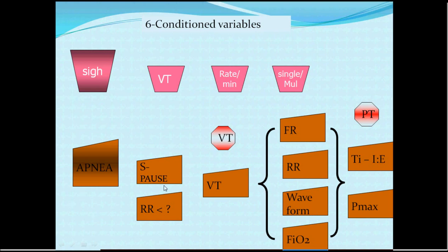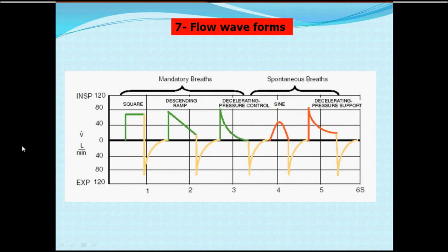Flow waveforms vary and are sometimes mandatory for certain modes of ventilation. If the patient is on volume-controlled ventilation, the flow waveform will be a square wave. If on pressure-controlled ventilation, it may be descending or decelerating. There is a difference between these waveforms regarding lung inflation and oxygenation — the decelerating waveform is better.